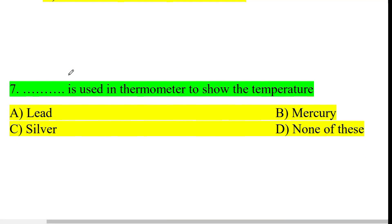Seventh question: what is used in the thermometer to show the temperature? The answer is option B — mercury.